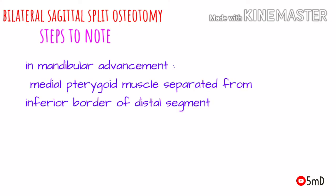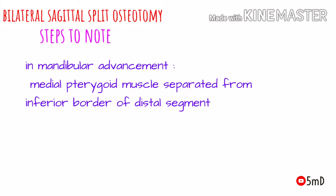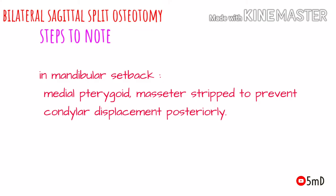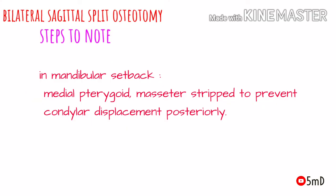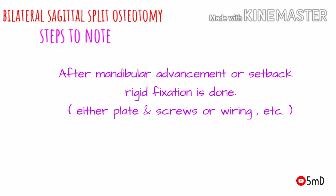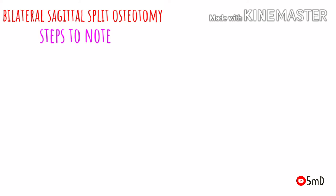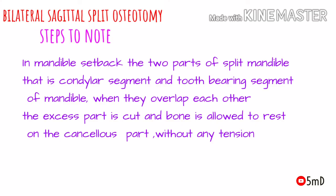When moving the mandible from its original position, the position of the condylar head and the muscles of mastication should be considered to prevent any damage. When mandibular advancement is made, the medial pterygoid muscle should be separated from the inferior border with a periosteal elevator. When the mandible is set back, the medial pterygoid and the masseter have to be stripped to prevent displacement of the condylar segment. If these preventive measures are missed, the condyle could dip posteriorly. The rigid fixation methods should also be carefully considered.